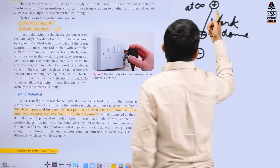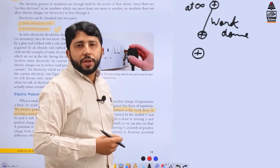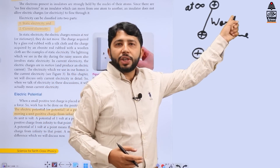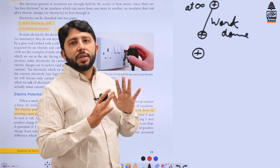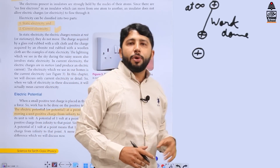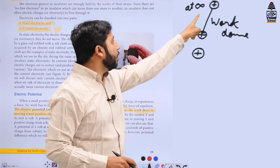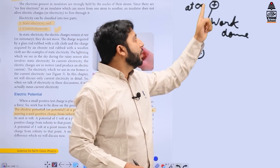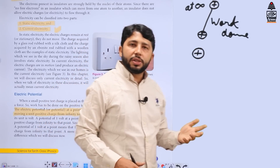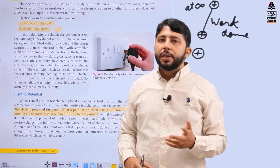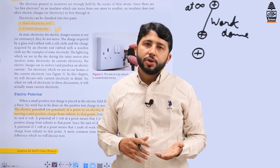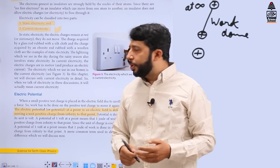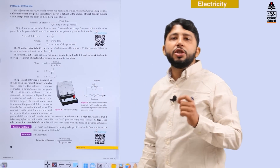We have taken a unit positive charge to avoid the problem that for different charges, the work done will be different. So we have taken a standardized unit positive charge, and for this, if we calculate the work done for bringing this charge from infinity to this point, we can call this the potential. Now, something may be at higher potential and something at lower potential, and a charge can move from higher potential to lower potential. So we need basically the potential difference.